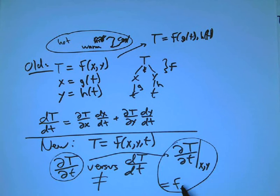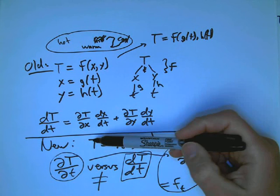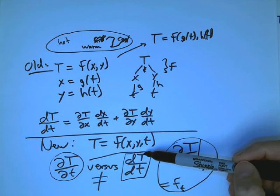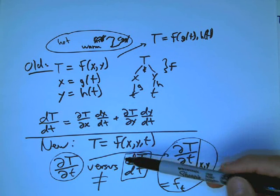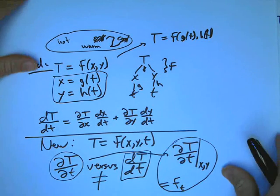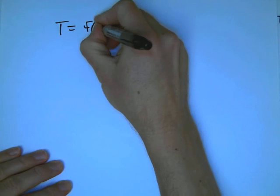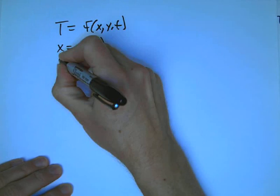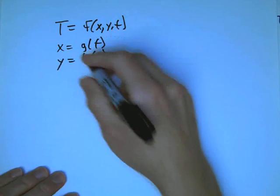Whereas the total derivative, if you just told me big T is a function of x, y, and t, and then you said calculate ordinary d of temperature with respect to time, I'd say that doesn't make any sense. This isn't a one variable function. You must mean a partial derivative. But then you'd say, oh wait, I forgot to tell you, x and y are functions of t as well. So the new setup completely is temperature as a function of position and time, and we still have x and y are functions of time as well.